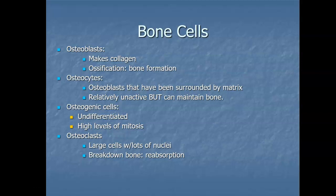So all bone cells — osteoblasts and osteocytes — come from these osteogenic stem cells. Even though bone looks hard and boring, it's actually a really active tissue. Just like old skin cells get sloughed off, bone must maintain its shape. If bone growth occurred our entire life with no breakdown, we'd have huge, massive, thick bones. So we actually have a cell that breaks down bone.